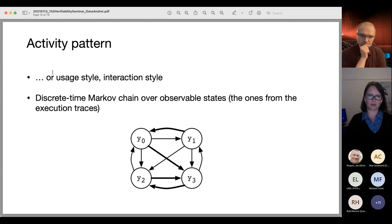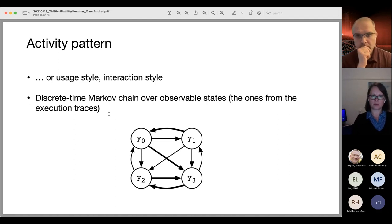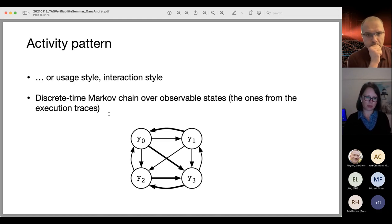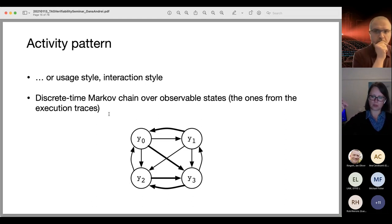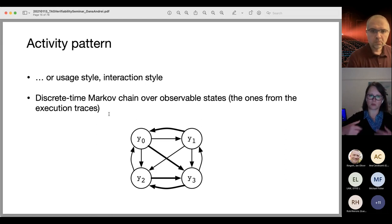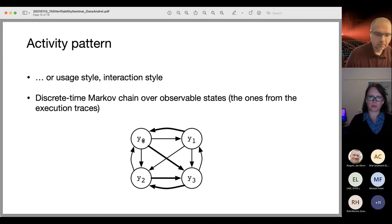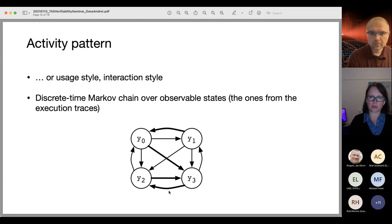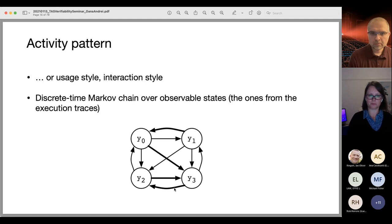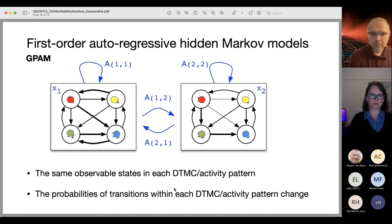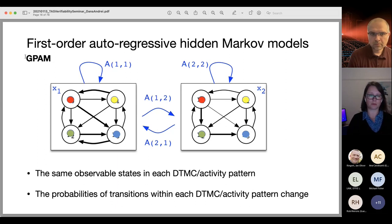What we call an activity pattern, or in other words usage style or interaction style, is for us a discrete time Markov chain over the observable states. Observable states are all those data states we see in the user trace — all the button taps in the log data coming from the users. In our model with two activity patterns, corresponding to hidden variables x1 and x2, we have the observed states inside each pattern. We also have probabilistic transitions between these activity patterns — self-loops or transitions from one pattern to another — because we want to see how users change their interaction style in time. We call this the generalized probabilistic admixture model, GPAM for short.